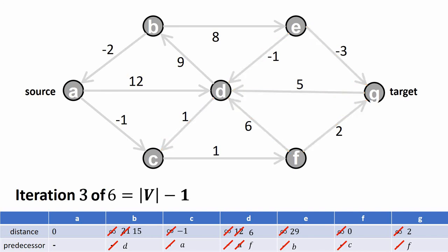In iteration 3, the only edge where something happens is the edge from B to E. Going from B to E gives 15 plus 8 equals 23, so the distance value of E becomes 23, and the predecessor is still vertex B.